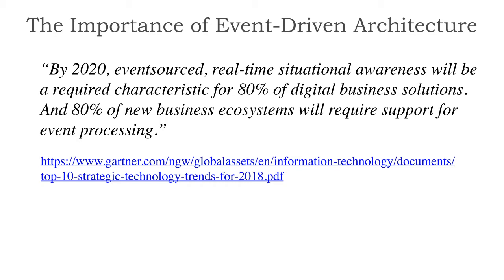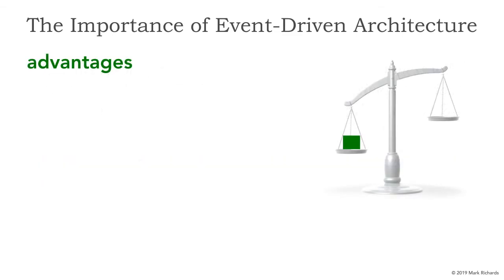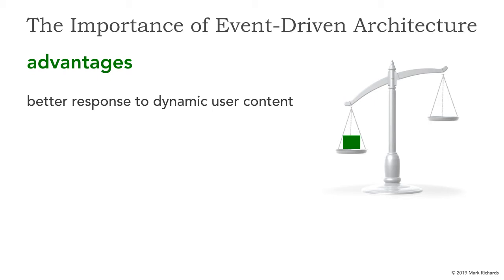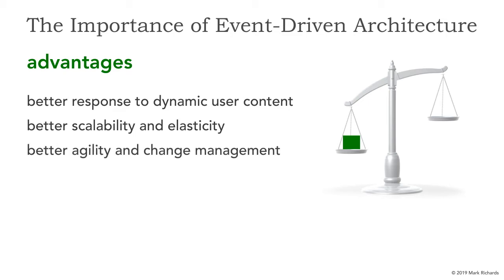What I'd like to do in this lesson is take a look at the advantages, but also the disadvantages of event-driven architecture and some of the trade-offs. Let's look at the advantages — why does Gartner predict that in 2020, 80% of most business applications will have to leverage event-driven? The first advantage is better response over request-based to dynamic user content. The second is better scalability and elasticity — scalability really being the overall growth of requests or users, elasticity being those unexpected peaks and valleys. Agility and change management are much better advantages here than over request-based because of the highly decoupled nature of components, services, and processors.